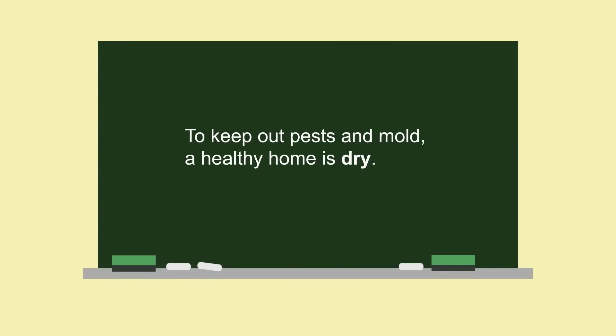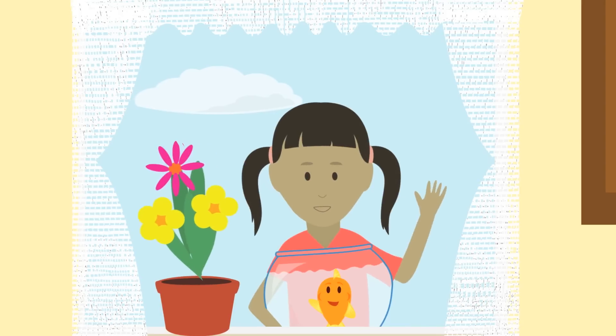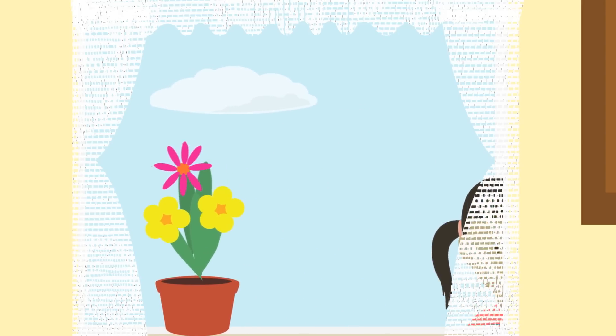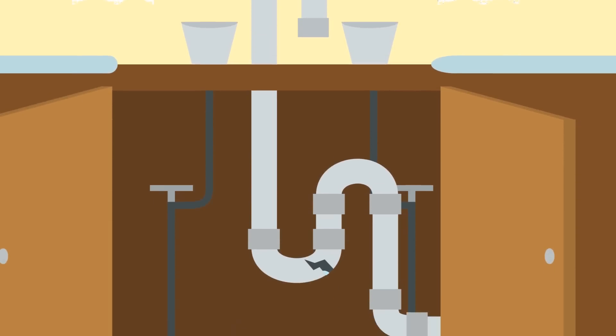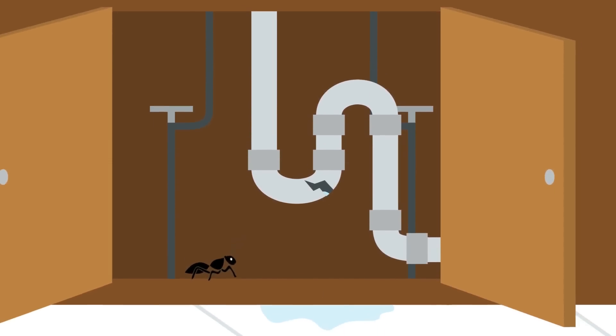To keep out pests and mold, a healthy home is dry. Rule number two is to keep your home dry. Sue has a good reason and she'll tell you why. When a home is too damp, it grows yucky old mold. And bugs come to visit. Damp spots make bugs bold.